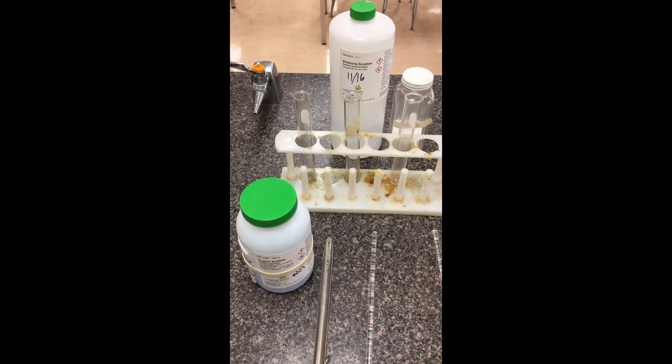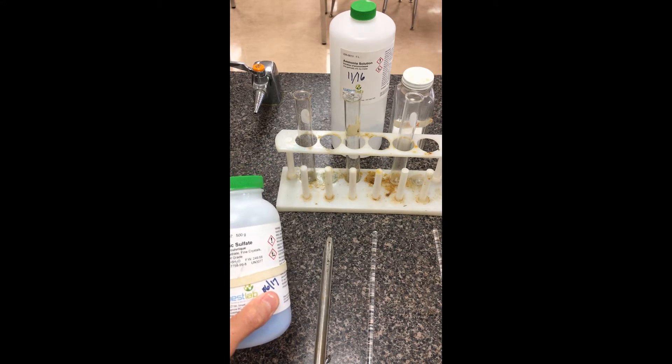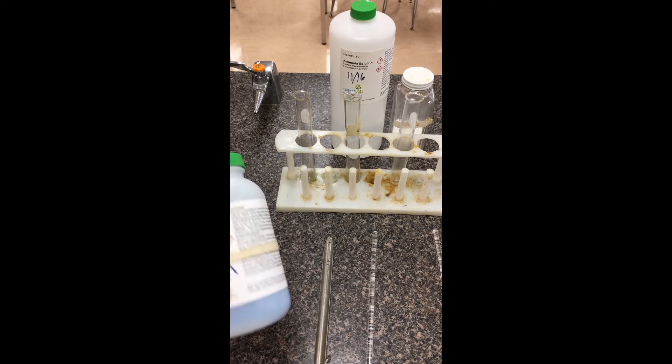So this is part two of our complex ion lab here. We're going to start off by making a solution of copper sulfate. This one here is the pentahydrate form. It gives off a really nice blue color as a solid.